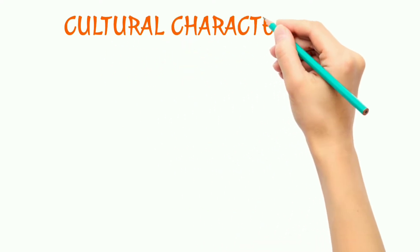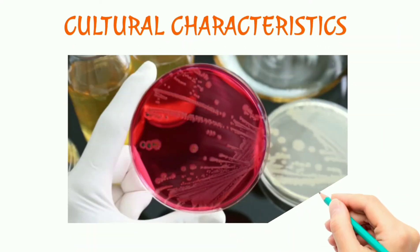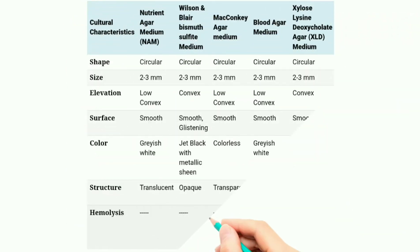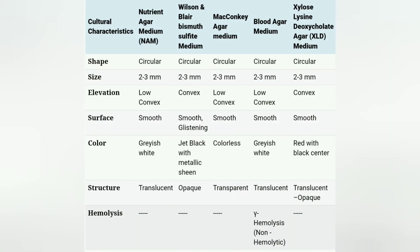Let's see the cultural characteristics of Salmonella typhi bacteria. It is circular in shape on all agar media and it shows low convex elevation on nutrient agar, MacConkey's agar, and blood agar. Its surface is smooth on all agar except on the Wilson Blair bismuth sulfite medium, where it shows a glistening surface.